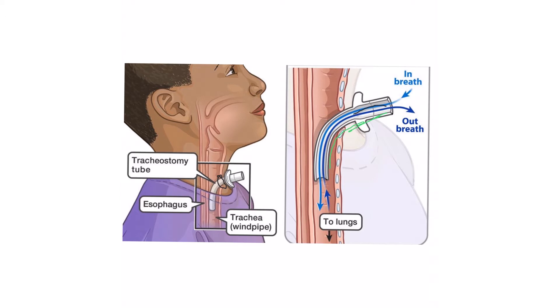They can be cuffed versus uncuffed, which means cuffed means they have a balloon here like an ET tube, and uncuffed means they don't have a balloon. They can also be angled like this one.